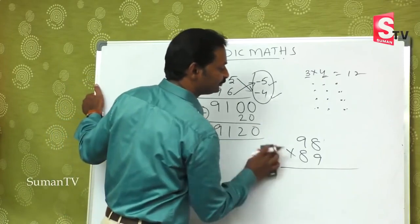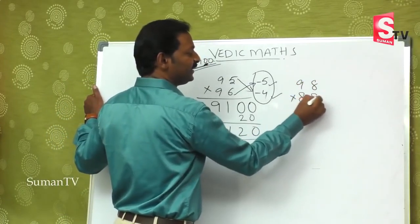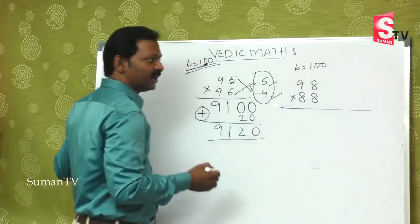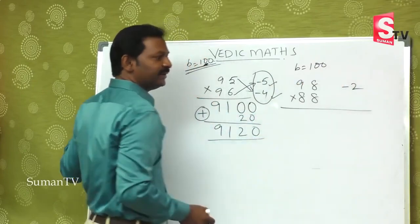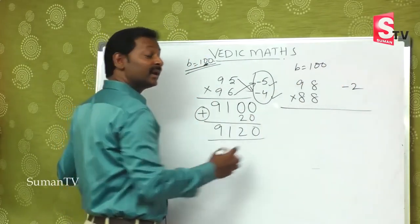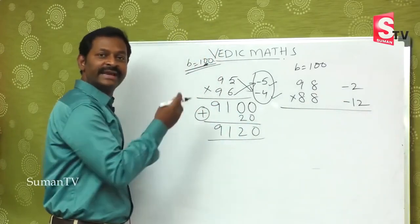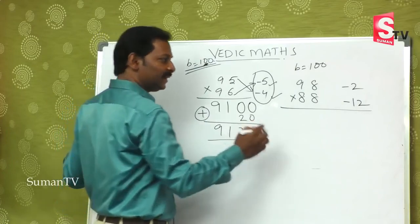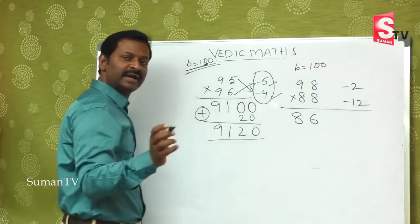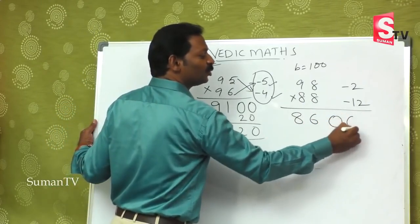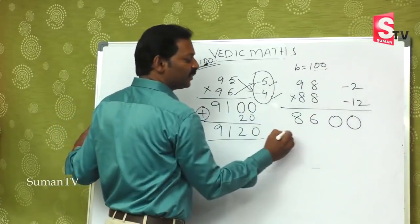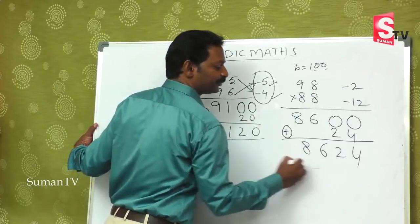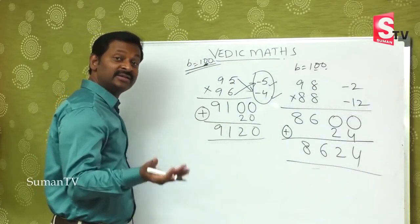What if 98 is multiplied by 88? The base value is 100. 98 is less than 100 by minus 2. And 88 is less than 100 by minus 12, because 88 plus 12 equals 100. So 88 minus 2 is 86 — and 98 minus 12 is also 86. First part of the answer is 86. Minus into minus is plus: 2 times 12 is 24. So the answer is 8624.